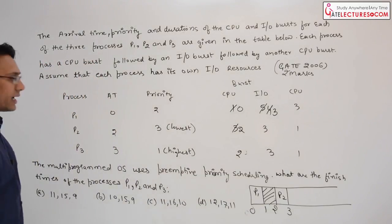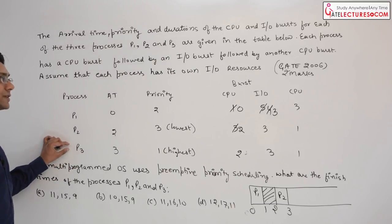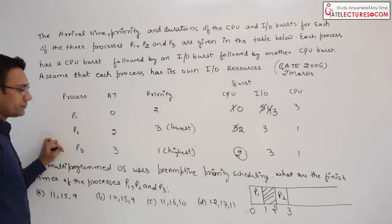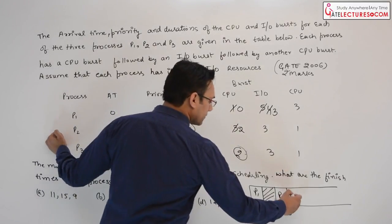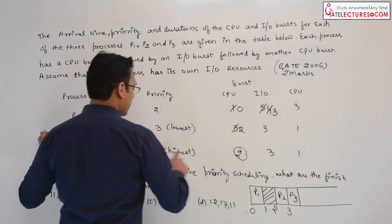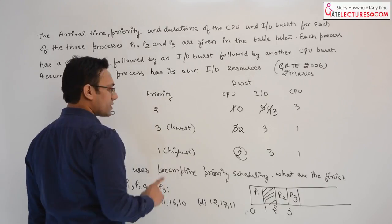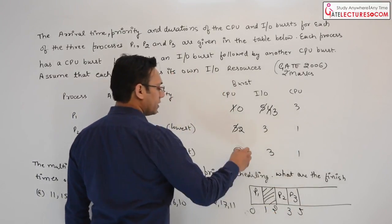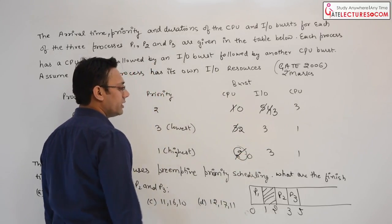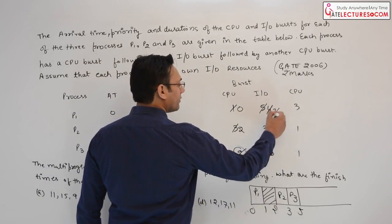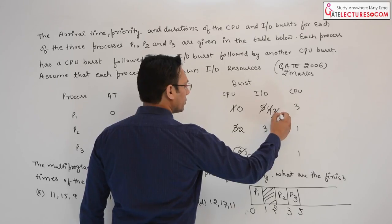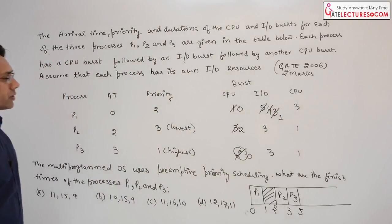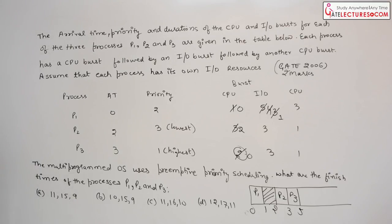Now we have process P3, which has the highest priority. Therefore it will finish all its CPU time at once. Process P3 has priority 1 and a CPU time of 2, so it will be finished at time 5. Till time 5, process P1 will finish 2 units of IO, meaning P1 will require only 1 more unit of IO.